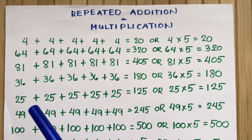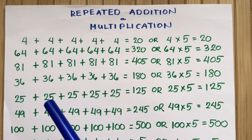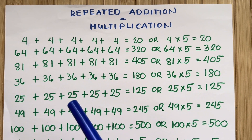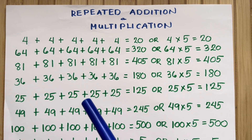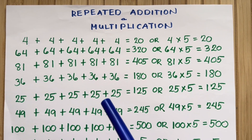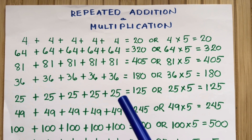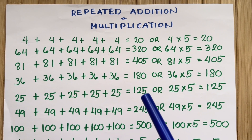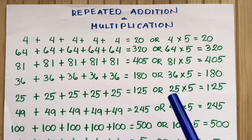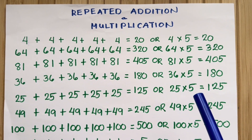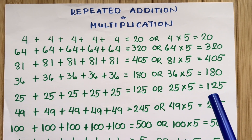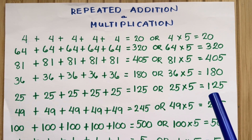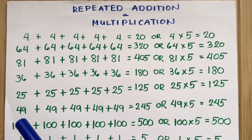25 plus 25 plus 25 plus 25 plus 25 is equals to 125. Or, 25 times 5 is equals to 125.